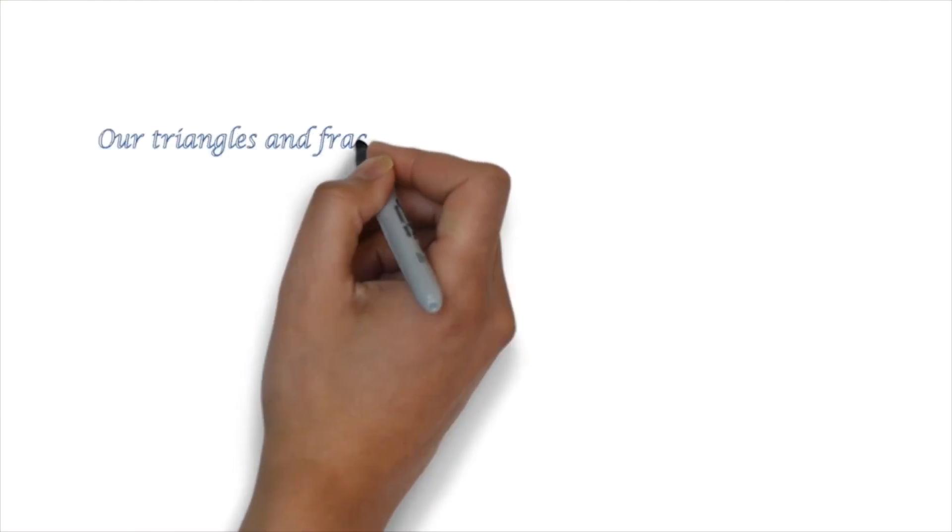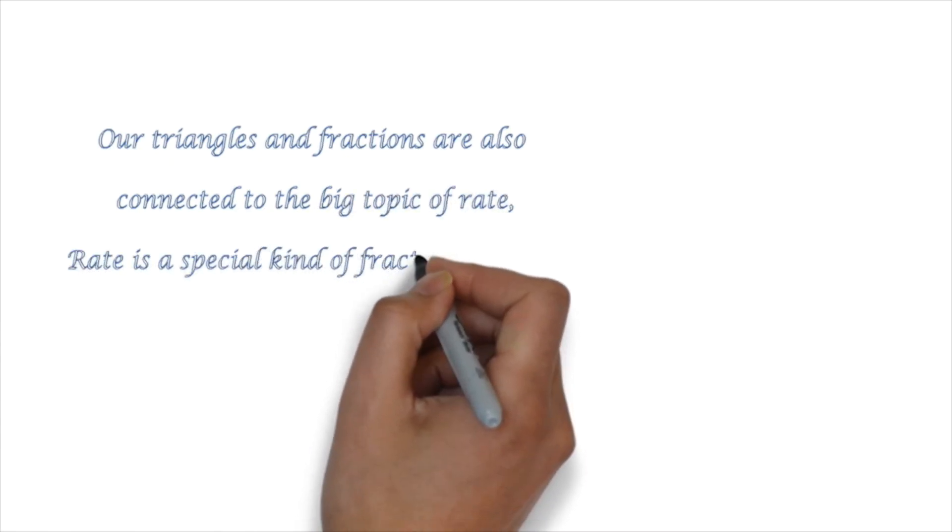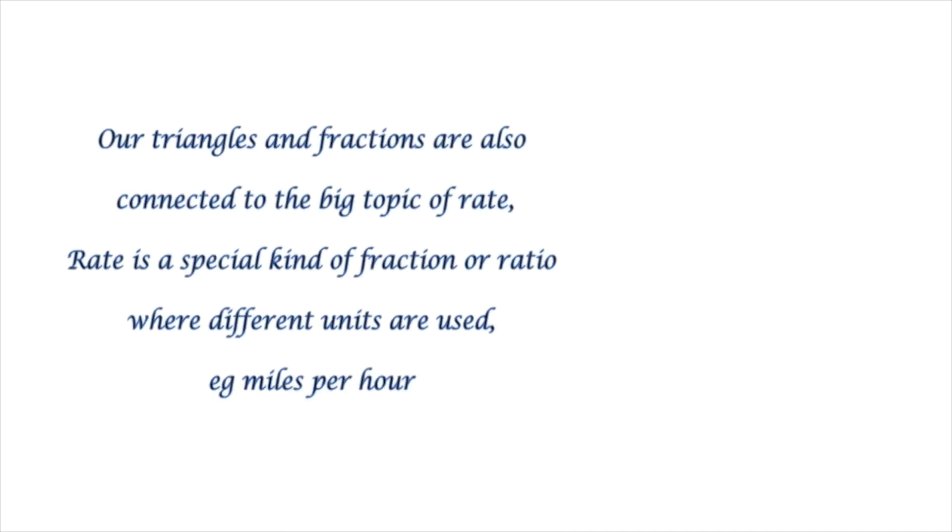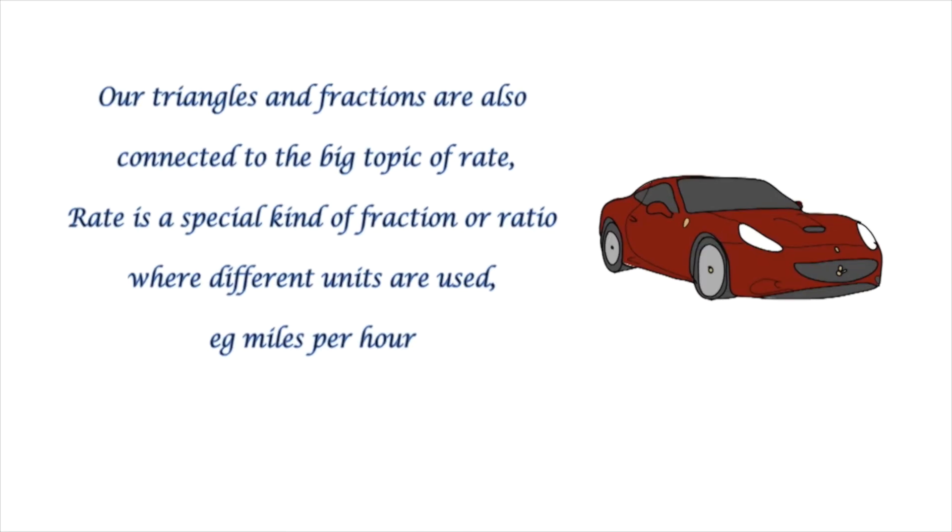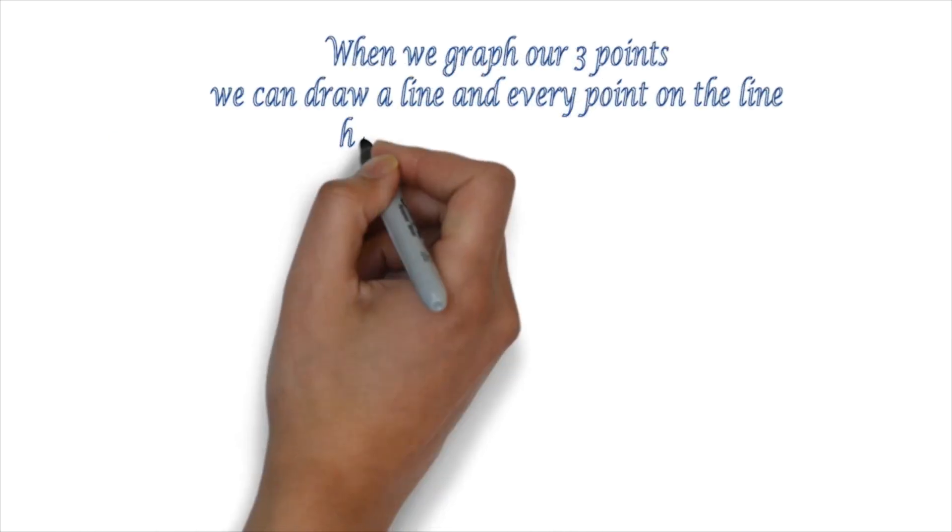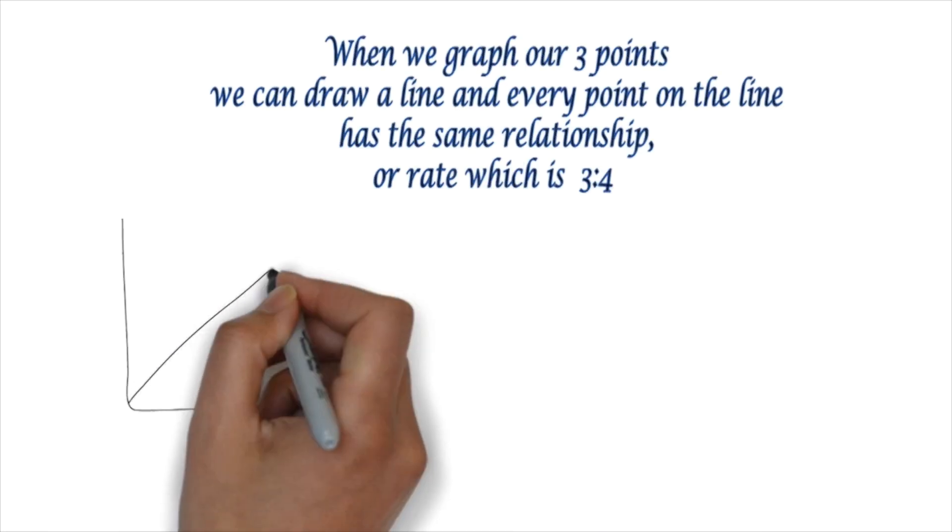Our triangles and fractions are also connected to the big topic of rate. Rate is a special kind of fraction or ratio where different units are used. For example, you might have miles per hour. When we graph our 3 points, we can draw a line, and every point on the line has the same relationship, or rate. And that rate is always 3-4.